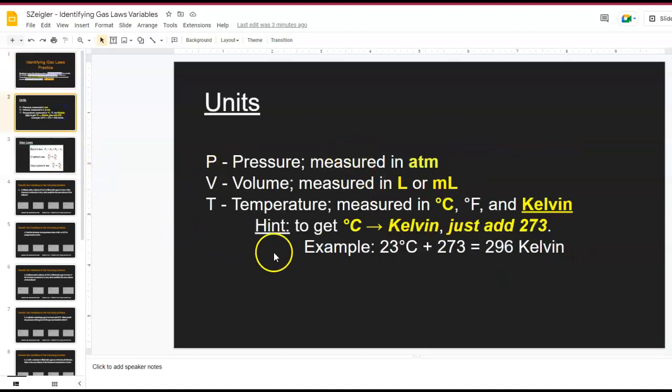So here on the next slide, this is to help you. So if you forget how to identify if it's pressure, it's measured in atmosphere. If it's in volume, it's either liters or milliliters. If it's temperature and they give you temperature in degrees Celsius, you have to convert it to Kelvin. When it's in degrees Celsius, you just add 273 to change it into Kelvin.